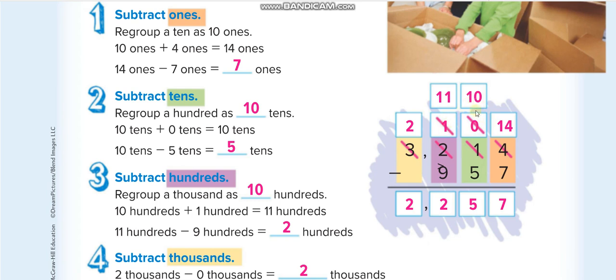We take one from this two, it will be one, and this zero will be ten. Ten minus five, five. Again we can't minus nine from one, so we take one from this three. The three will be two. If we bring one with this one, it will be eleven. 11 minus 9, two. And two down here.